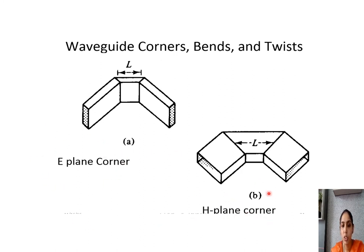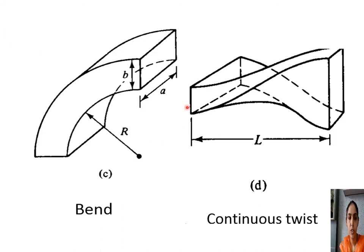Here capital L represents the mean length between the discontinuities of the waveguide. After this length, the guide gets a bend, goes to a corner, or goes to a twist. L always represents the mean length between the discontinuities. A twist is used for changing the direction of polarization, and here capital L again represents the mean distance between the discontinuities.